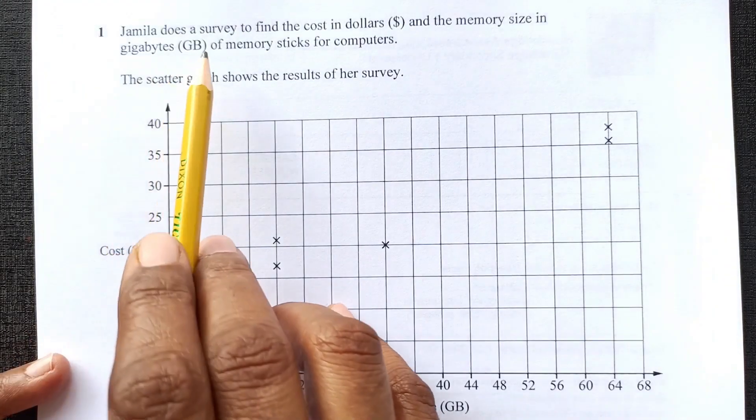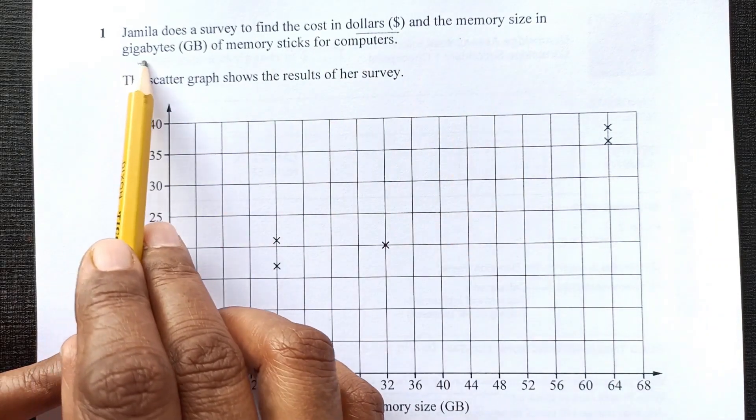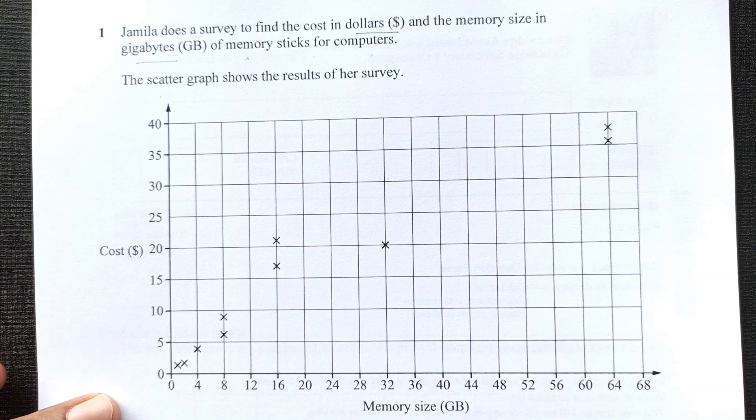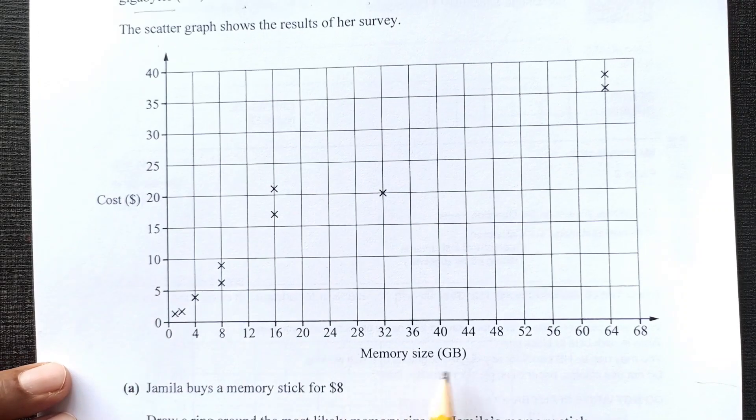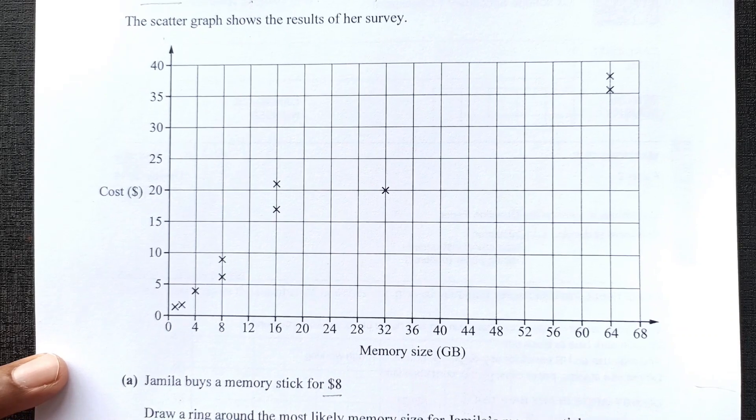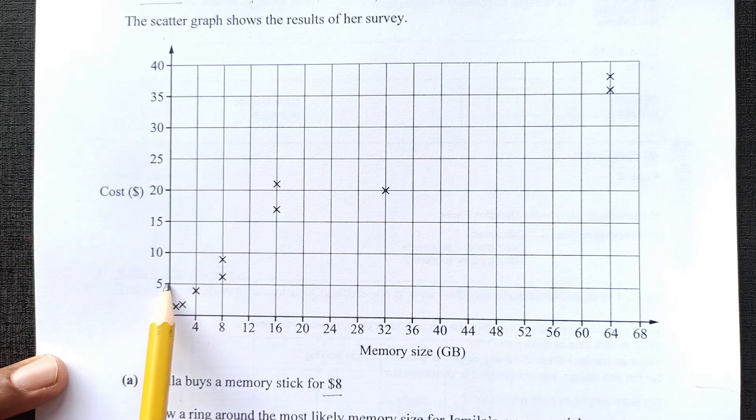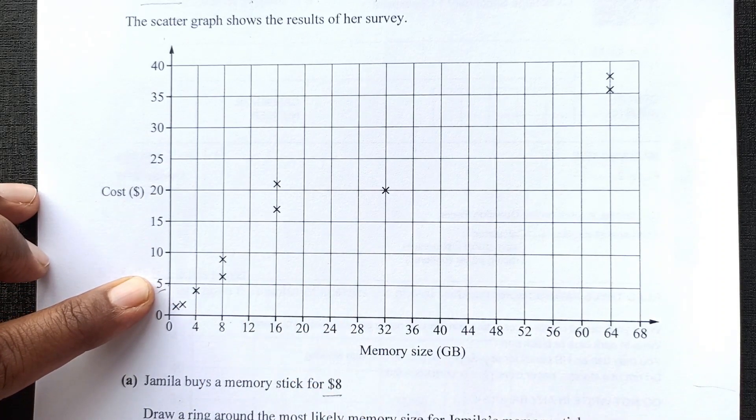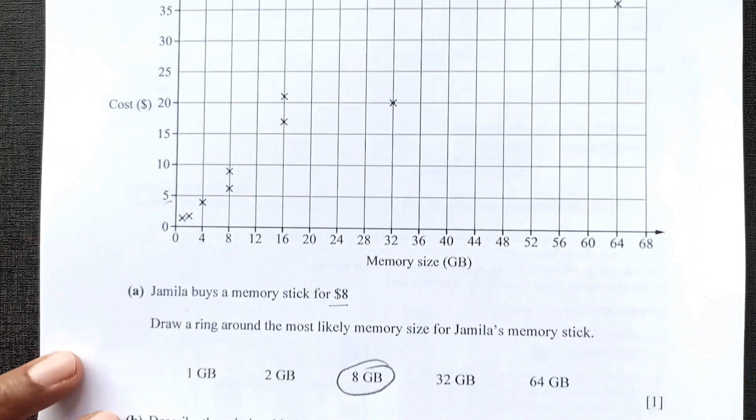Question 1. Jamila does a survey to find the cost in dollars and the memory size in gigabytes of memory sticks for computers. The scatter graph shows the result of her survey. You can see the survey here. This is cost here, this is memory size. Jamila buys a memory stick for 8 dollars. Draw a ring around the most likely memory size of Jamila's memory stick. 8 dollars is where? Here we can see. This is the cost 5, it will be between here. Then we have here 2 of them which are 8 GB. So we will circle here 8 GB.